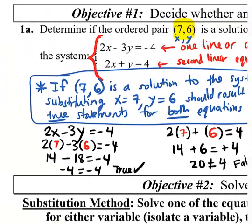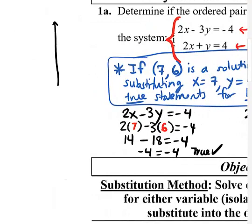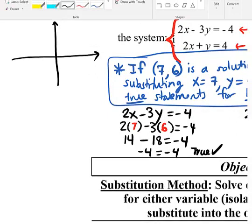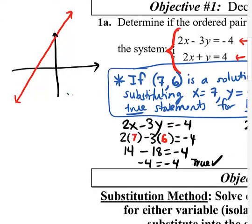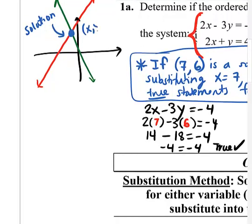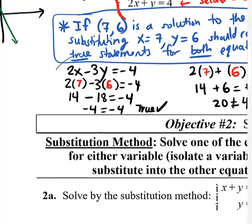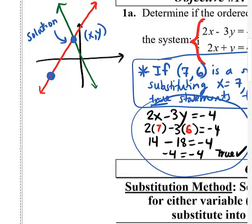In the big picture, when they say there's a solution to the system, that point should be on both lines. Both equations are linear, so they can be represented by lines visually. The solution to the system is actually the intersection point — the place where they intersect. So technically there should be only one solution to every system. Point 7 comma 6 worked for the first equation, meaning it was on that line, but not the second, so it's not a solution.